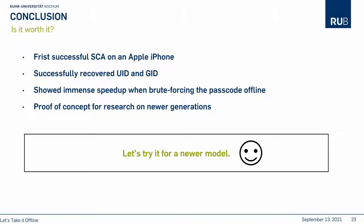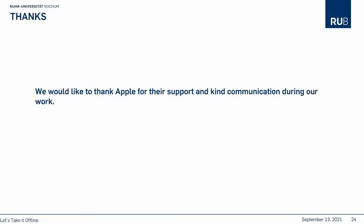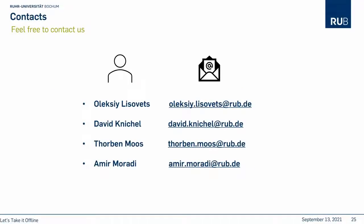Was it worth it? We showed that a side-channel attack can be performed on a compact architecture like an Apple iPhone. By extracting the UID key, we showed that passcode search can be accelerated dramatically. The only drawback is that the considered iPhone 4 is a rather old model, but the research community can take our work as a proof of concept and guidance for analysis of more up-to-date series. Finally, we would like to thank Apple for their support and kind communication during our work. Thanks for following this talk — if you have any questions, feel free to reach out to Oleksii, Torben, Amir, or me.